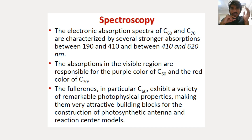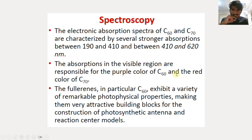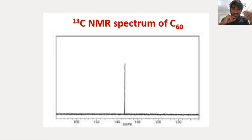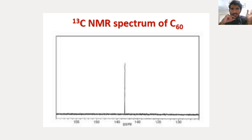Moving on to spectroscopy: C60 has stronger absorption from 190 to 410 nm, whereas C70 has stronger absorption from 410 to 620 nm. The absorptions in the visible region are responsible for the purple color of C60 and the reddish-brown color of C70. Fullerenes, particularly C60, exhibit a variety of remarkable photophysical properties, making them attractive building blocks for photosynthetic antenna and reaction center models. In 13C NMR spectra of C60, only a single signal is obtained because all carbon atoms are equivalent.